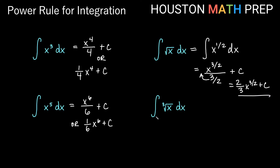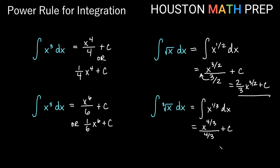The antiderivative of the cube root of x dx. The index of three for the cube root makes this the one-third power, so we treat it as the integral of x to the one-third dx. We raise the power by one: one-third plus one gives us one and one-third, also known as four-thirds. So we get x to the four-thirds, then divide by four-thirds plus c. Cleaning that up by multiplying by the reciprocal, we get three-fourths x to the four-thirds plus our constant.